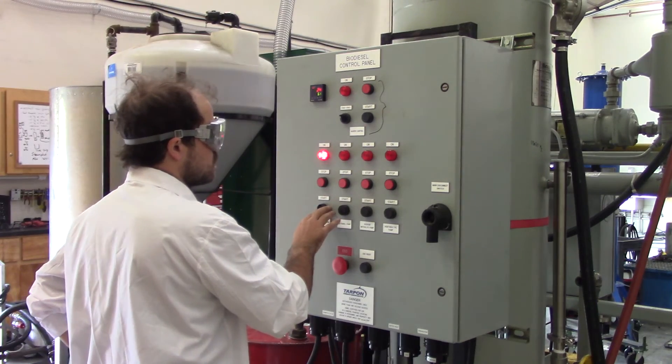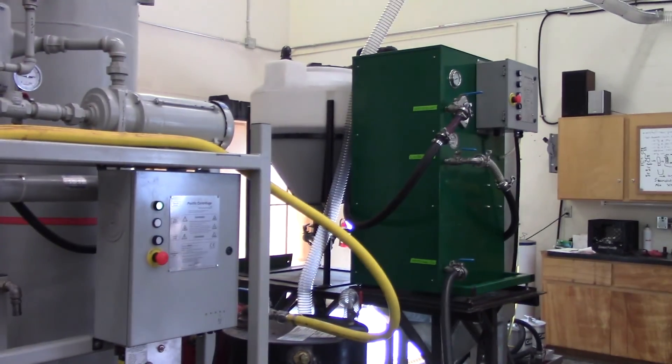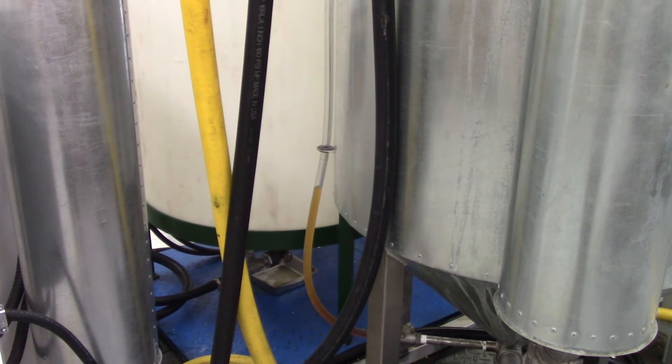Once again, the reaction is run for an hour, and then put through the demethylator and centrifuge. The substance you're left with is biodiesel fuel, but it still has impurities. The next step is to wash the biodiesel to ensure you're making quality fuel.